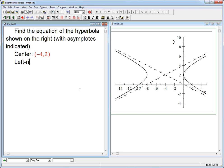Now we note that it's a left-right opening hyperbola, and so we can already write down a lot of the standard form. It's going to be (x + 4)² / a² minus (y - 2)² / b² = 1, where a and b are still to be determined.